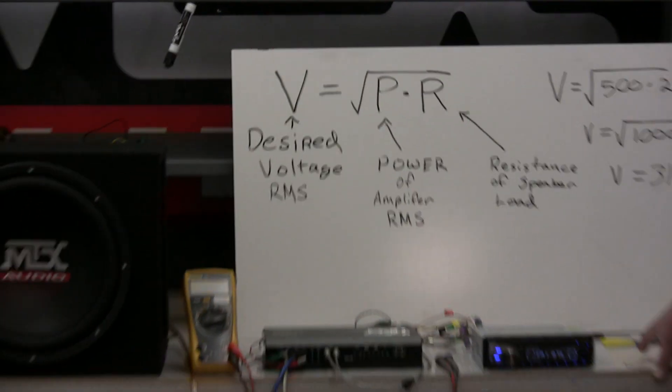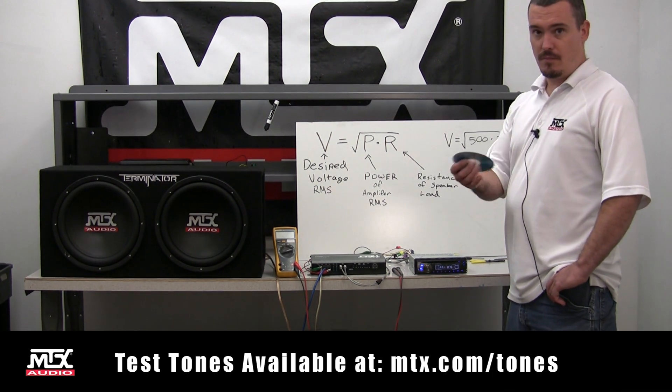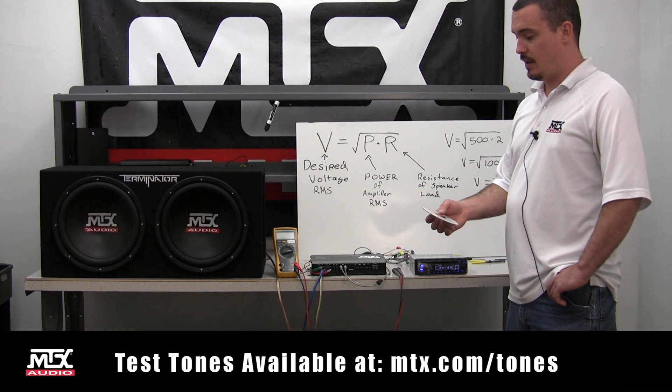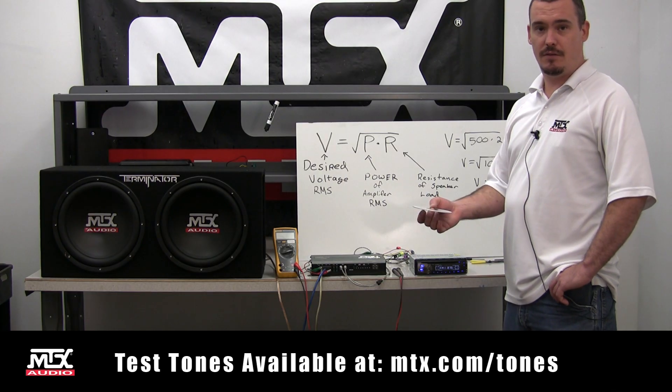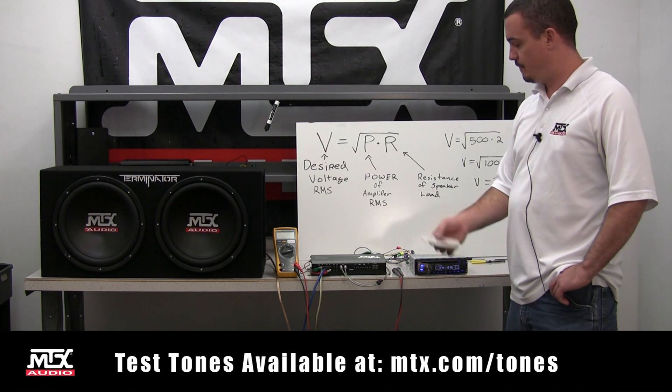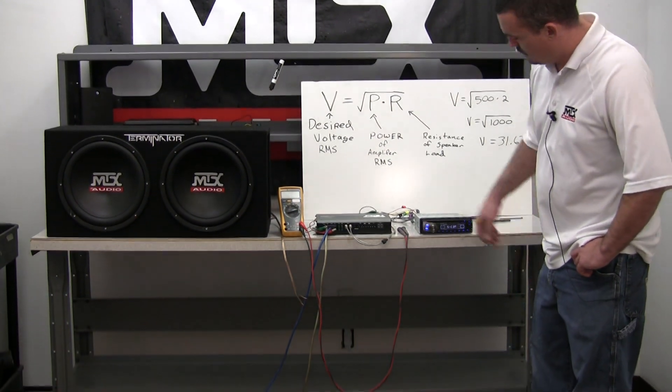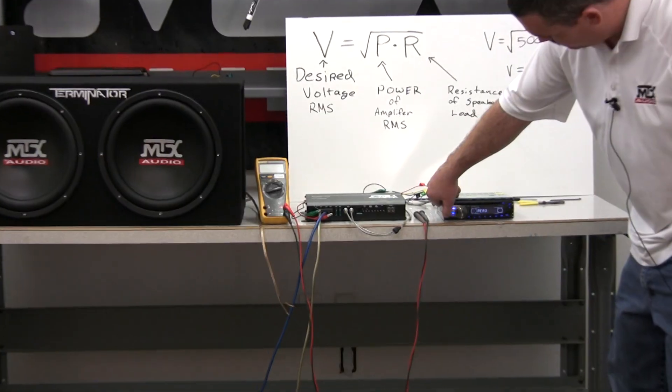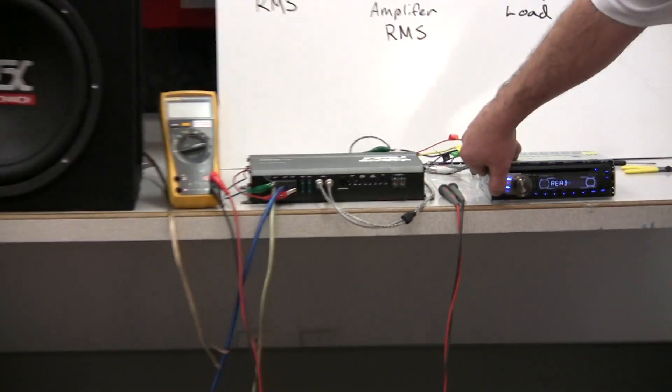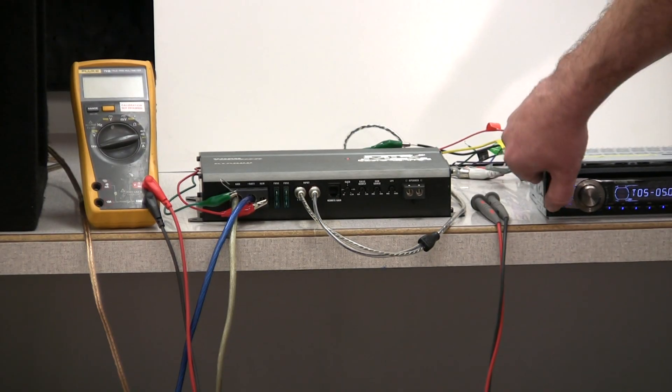So what I've done is I've created a test disc from our website and it just basically contains a 50 hertz tone that's recorded at a level that a normal CD would be recorded at. I'm going to put that in my head unit and select that track and I'm going to set it on repeat so I don't have to rush around and do anything crazy and kill myself.